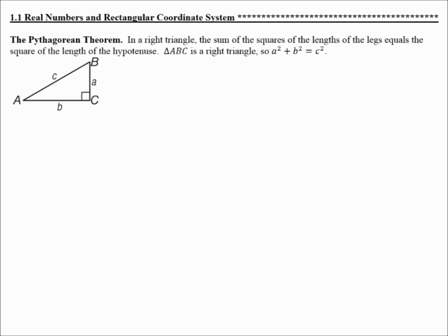The Pythagorean Theorem says: in a right triangle, the sum of the squares of the lengths of the legs equals the square of the length of the hypotenuse. In this figure, triangle ABC is a right triangle. A and B are the legs, and C is the hypotenuse, so A squared plus B squared equals C squared. C is always the hypotenuse — it's across from the right angle.